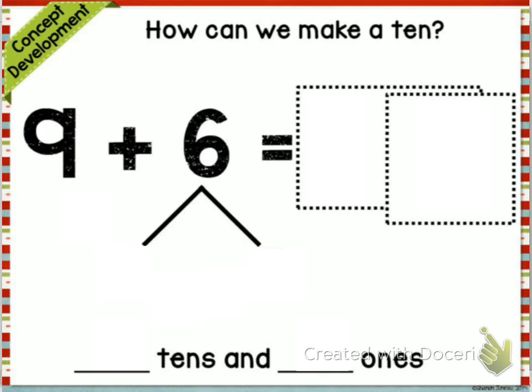So that greedy 9 is going to go to that 6 and say, hey 6, can I have 1? And the 6 is going to say, well, since you're bigger than me, I'm going to let you have it. So the 9 is going to take 1 away from that 6 so it can become 10. And since the 9 takes 1 away from the 6, there's going to be 5 left of that 6.